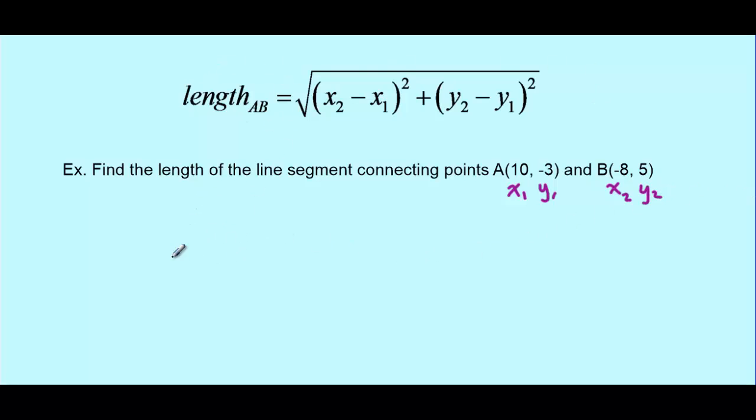So our length formula is up here, and I'm going to rewrite it as we work through this. The length of AB equals the square root. And now let's plug in our values. So x2 minus x1. x2 is negative 8. x1 is 10. So minus 10. That's all going to be squared. Whatever that answer is, it will be squared.